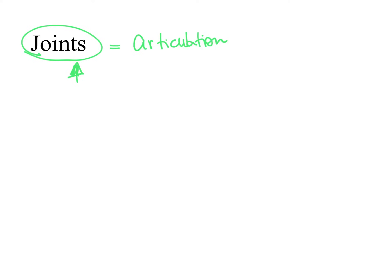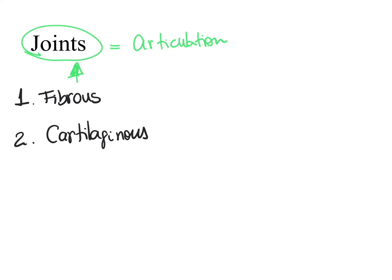There are several ways to classify joints. The first way we will look at is joint classification based on what we find connecting the bones in that joint. Based on this classification, we have joints that fall into the fibrous category, joints that fall into the cartilaginous category, and joints that fall into the synovial category.